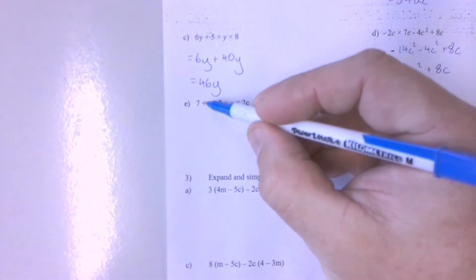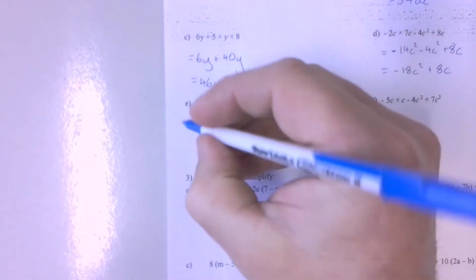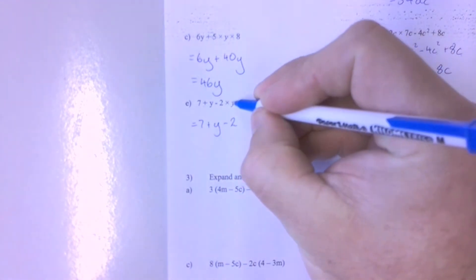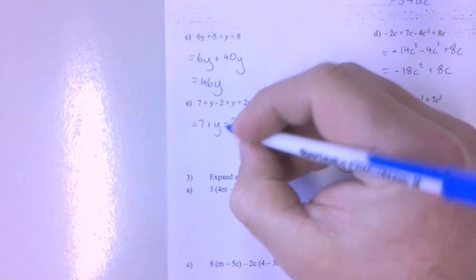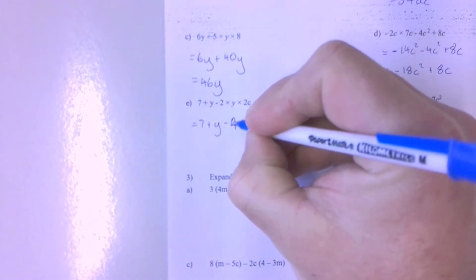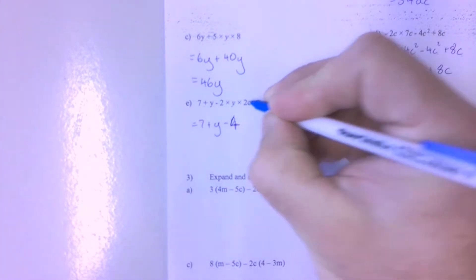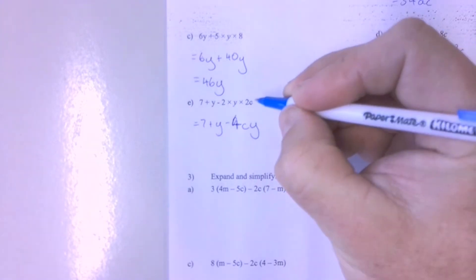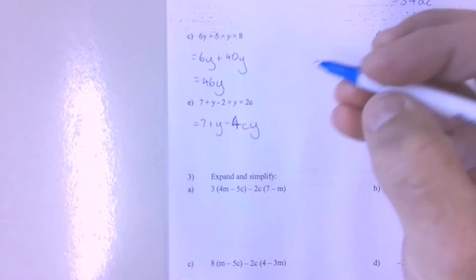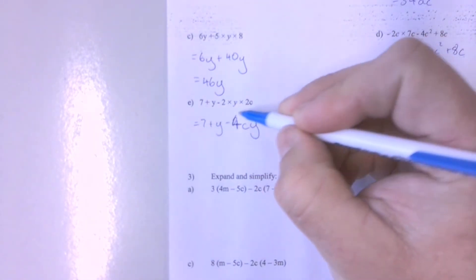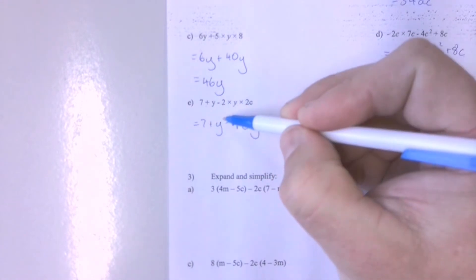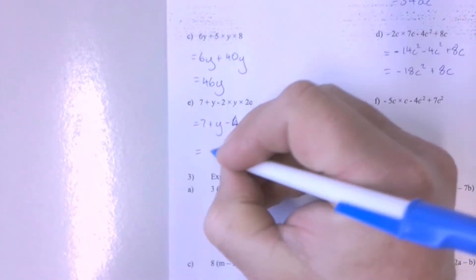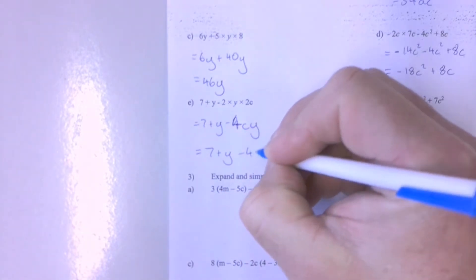Question 1E has got addition, subtraction, and multiplication. I'm going to do the multiplication first, so I'll drop my 7 plus Y minus 2. Now I've got 2 times Y times 2C, so this is actually minus 4 — I've got minus 2 times 2 — CY. Now I can do my addition. I've got 7 and that can't be added to anything else. I've got a group of Y, but that's different to groups of CY. And I've got negative 4 groups of CY. So 7 plus Y minus 4CY is the correct answer.